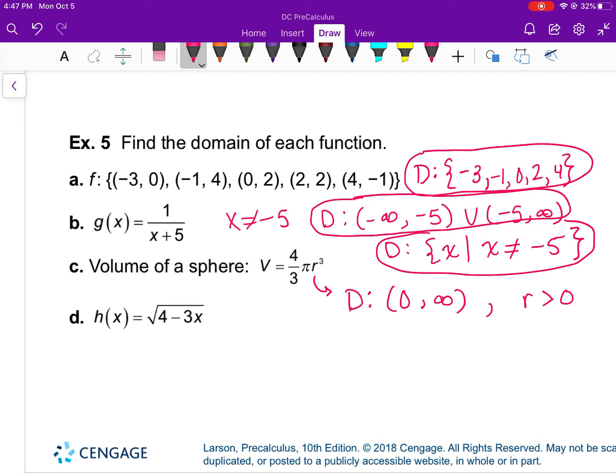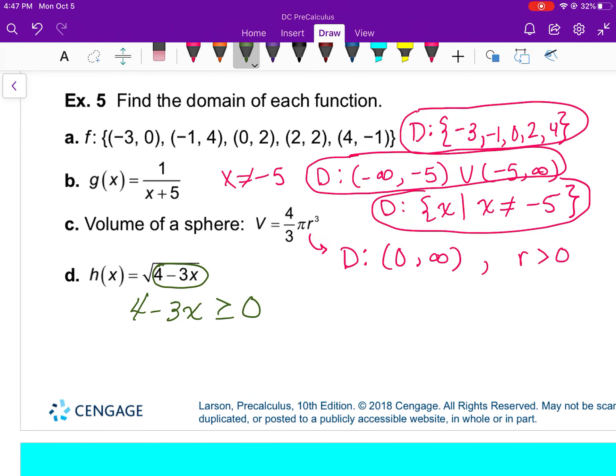And for this last one, we know whatever's under the radical has to stay positive or 0. So we're just going to take it out: greater than or equal to 0. It's also going to have an implied domain. I'm going to work on solving it for x. Dividing by a negative, we'll flip it back. And so the domain would be negative infinity to 4 thirds with a bracket. Or, if you wanted set builder, it's all x such that x is less than or equal to 4 thirds.